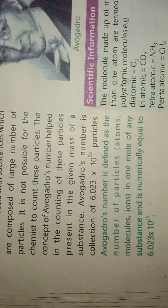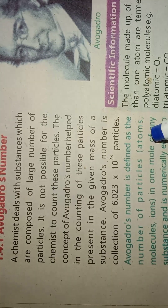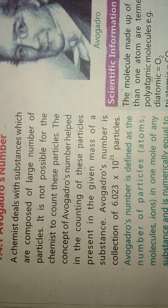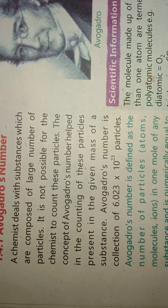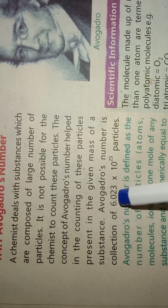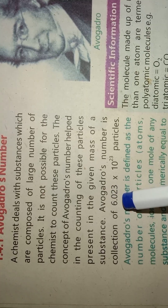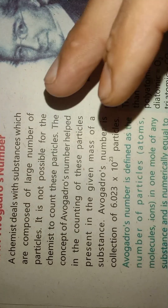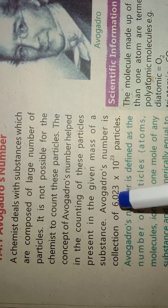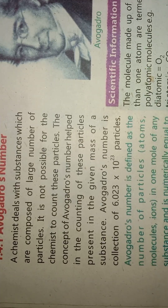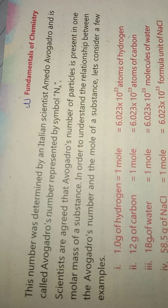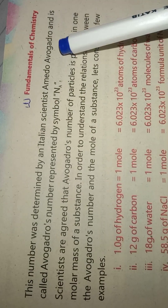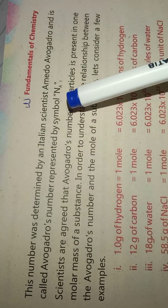The number of particles refers to the number of atoms, molecules, and ions. This number was determined by the Italian scientist Amido Avogadro, and it is called the Avogadro number, represented by NA.